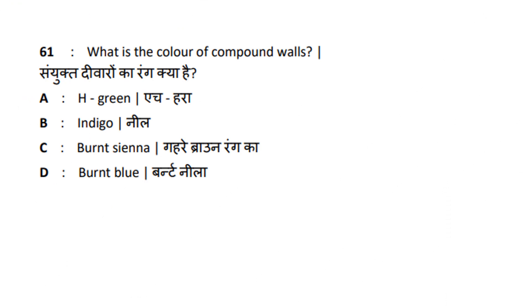What is the color of compound walls? Compound walls are colored as shown. Answer is option B — Indigo. Indigo is the color for compound walls.